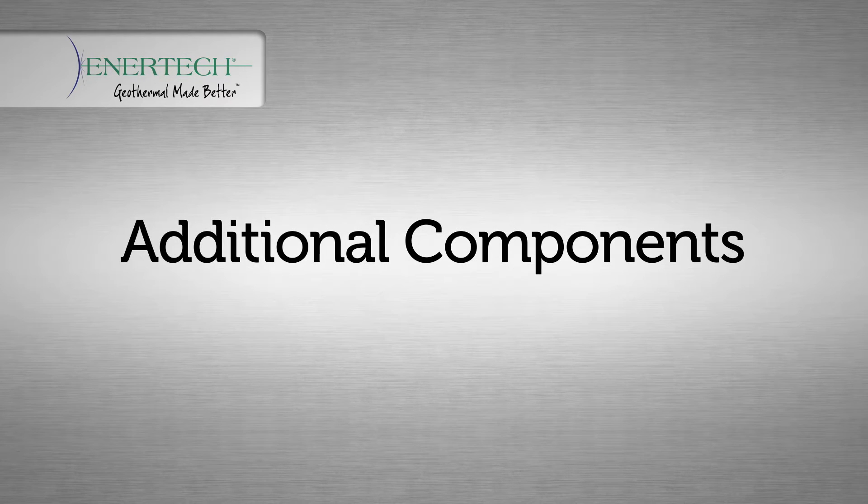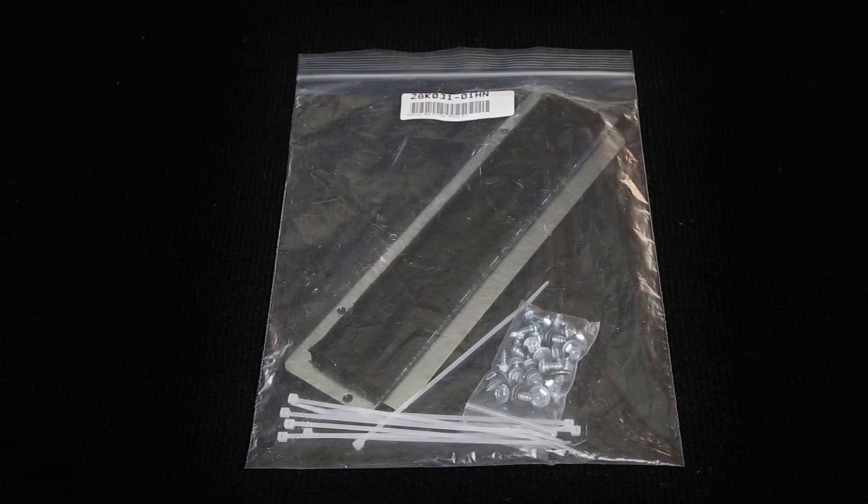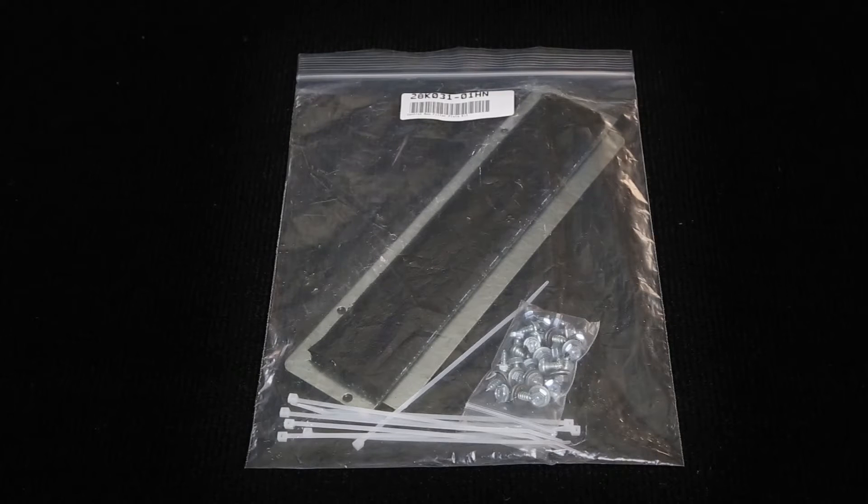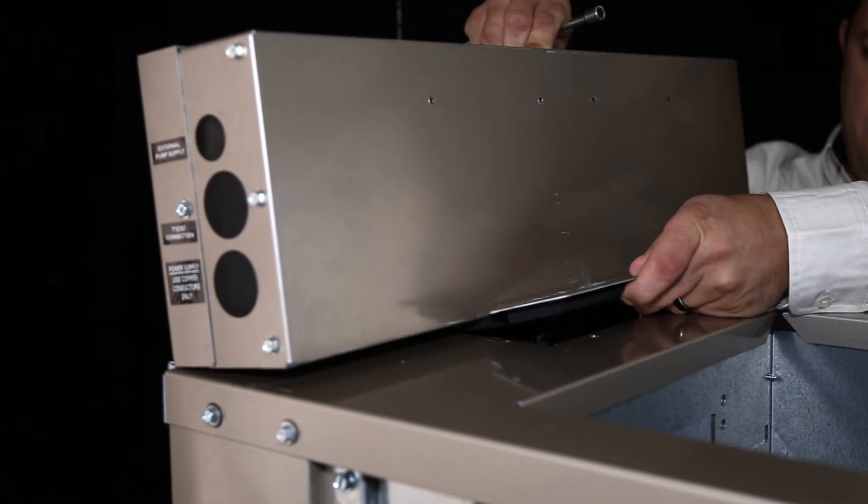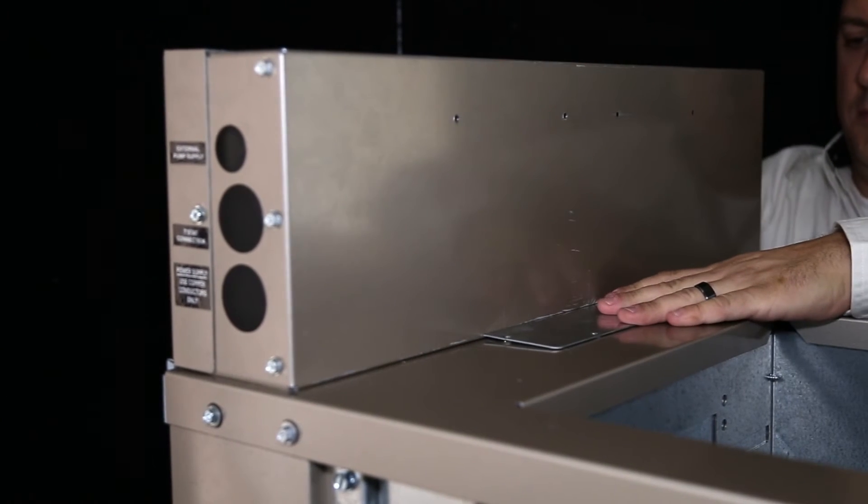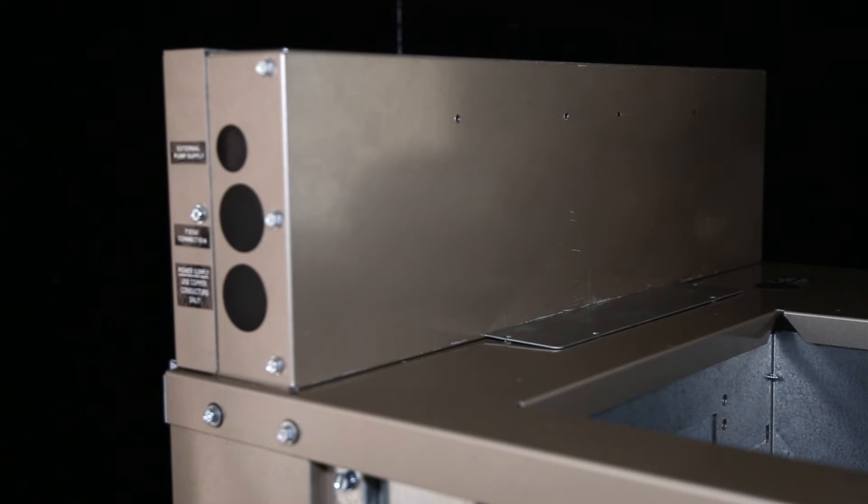There are several packages of components shipped with the unit. One package has a small filler plate, screws, and plastic tie straps. Slide the small filler plate into the slot at the bottom rear of the control box. This plate will cover and insulate the remainder of the access port.